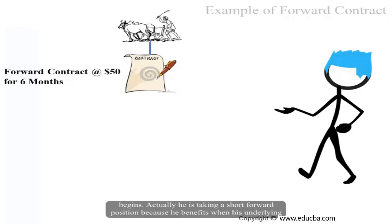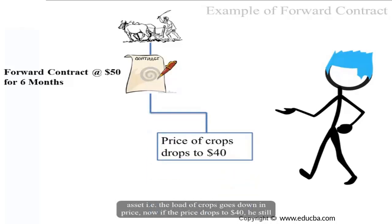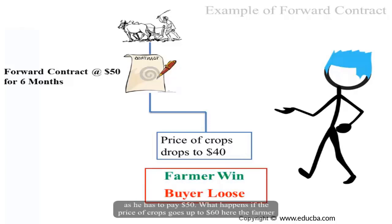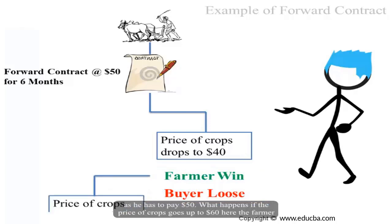The farmer is taking a short forward position because he benefits when his underlying asset — the load of crops — goes down in price. If the price drops to $40, he still has the right to charge $50 for his load. So the farmer wins and the buyer makes a loss, having to pay $50.